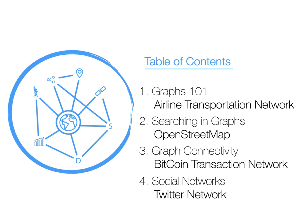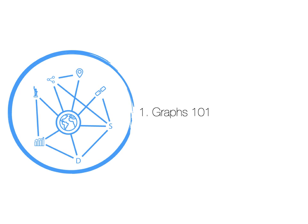We're going to start with a simple graphs 101 introduction using the airline transportation network, which has easily available data from the Bureau of Transportation Statistics. In section two we'll look at searching and navigating on graphs using the OpenStreetMap dataset queried via the osmnx package. In section three we'll focus on graph connectivity using a sample of the Bitcoin transaction network to identify wallets — sets of Bitcoin addresses controlled by the same person or institution. Finally in part four, we'll have a quick overview of properties of social networks using a small Twitter reply network from the Stanford networks repository.